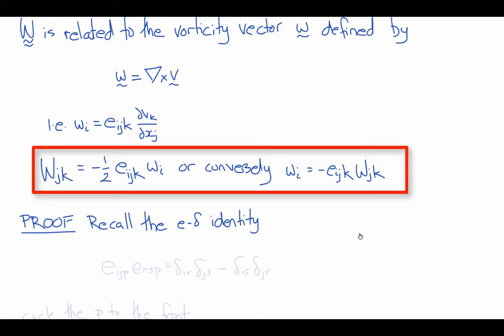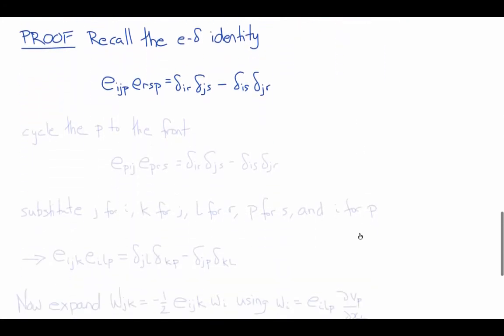The way that we wrote the e-delta identity was eijp e-rsp equals delta ir delta js minus delta is delta jr. We need to rearrange this to put it in a form that's more useful for us.